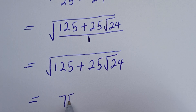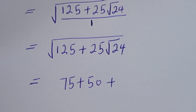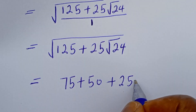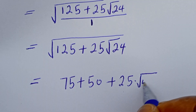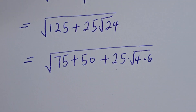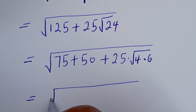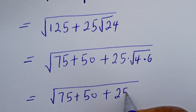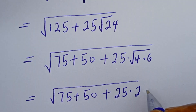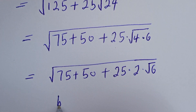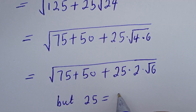125 can be written as 75 plus 50, then plus 25 multiplied by — this can be written as root 4 multiplied by 6. This is equal to square root of 75 plus 50 plus 25 multiplied by 2 multiplied by root 6.